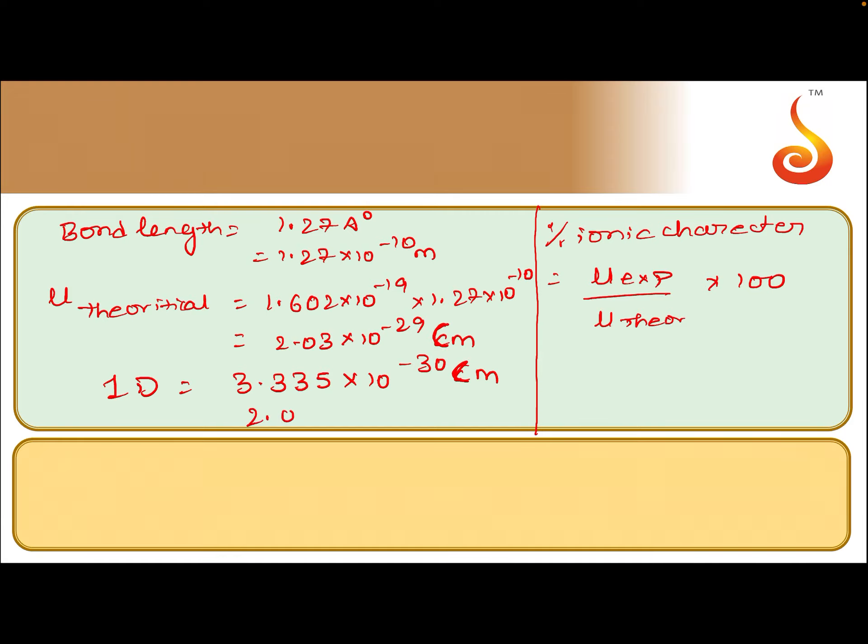If it is 2.03 into 10 to the power of minus 29 coulomb meter, how many Debye? That is 2.03 into 10 to the power of minus 29 by 3.335 into 10 to the power of minus 30. This is 6.09 Debye.